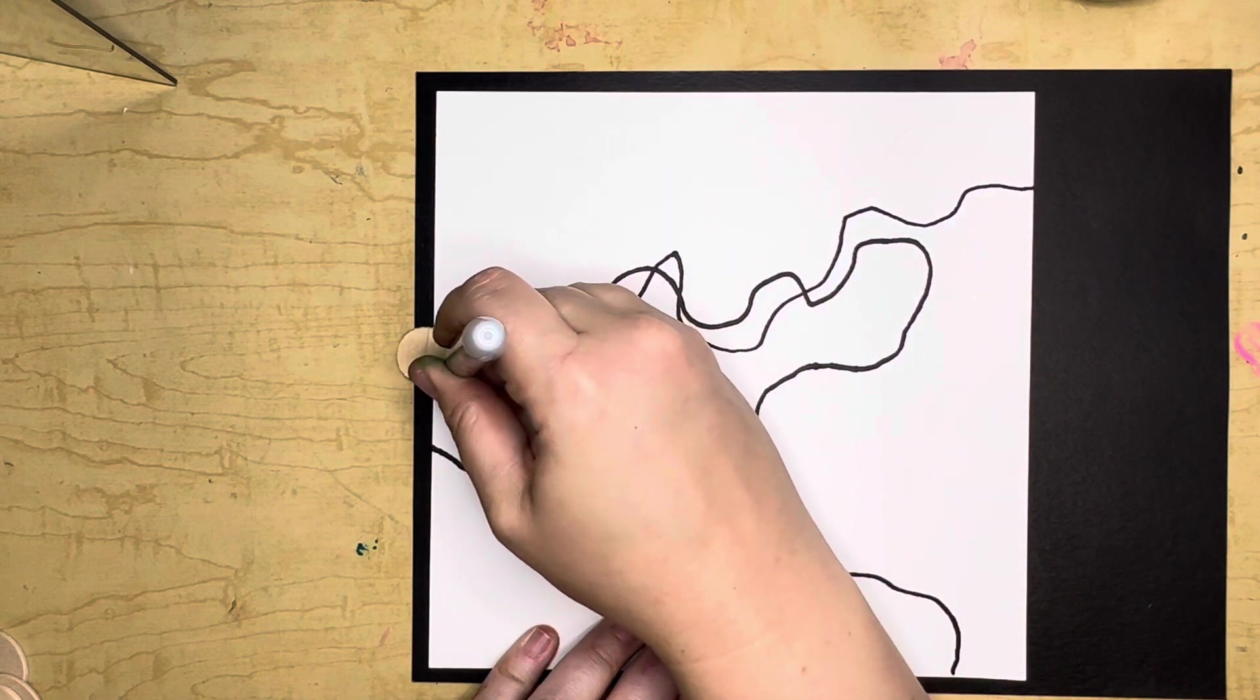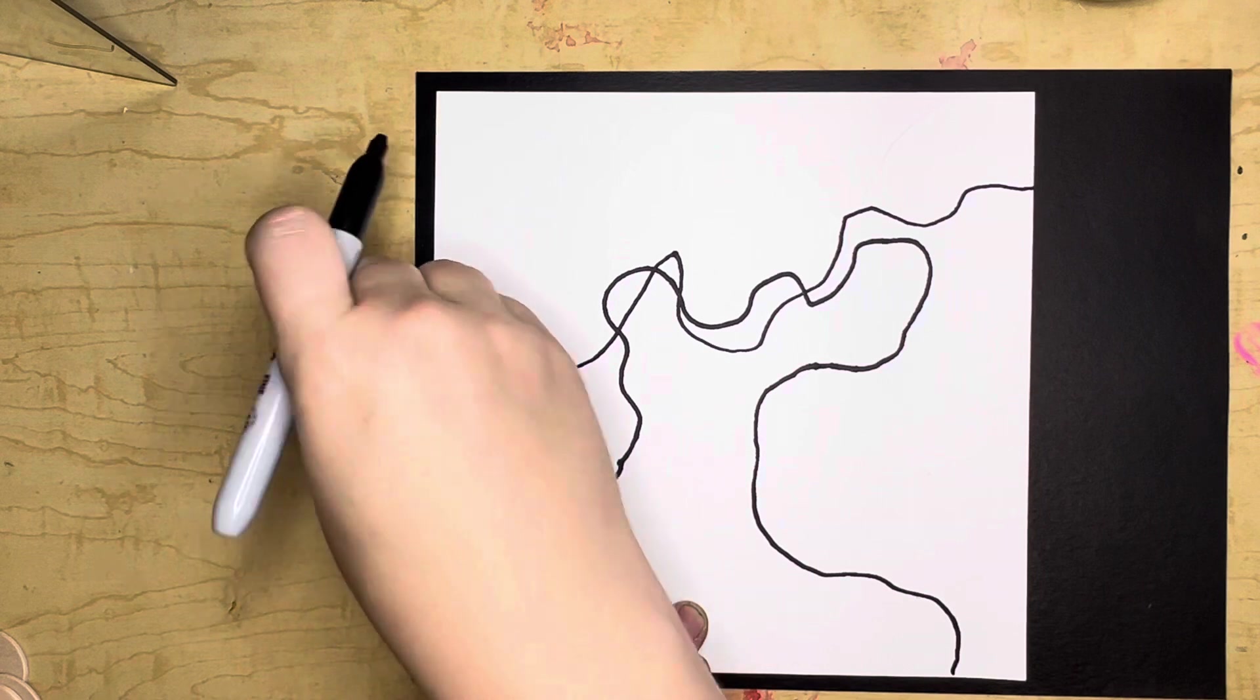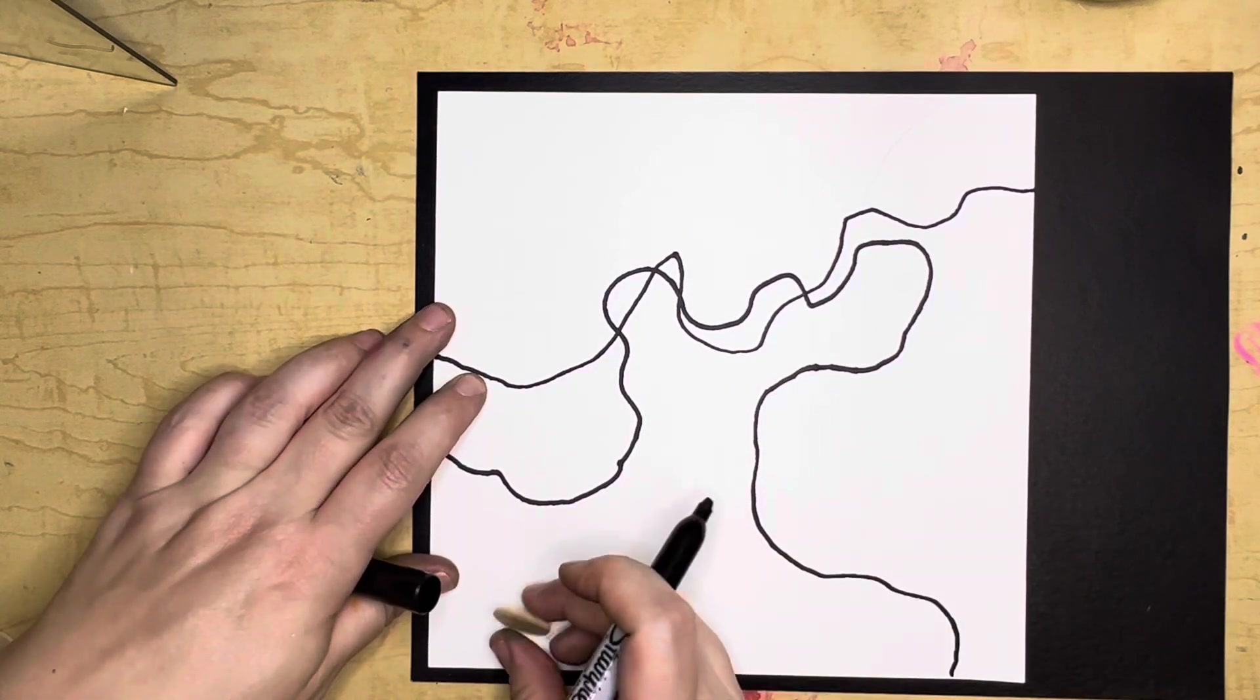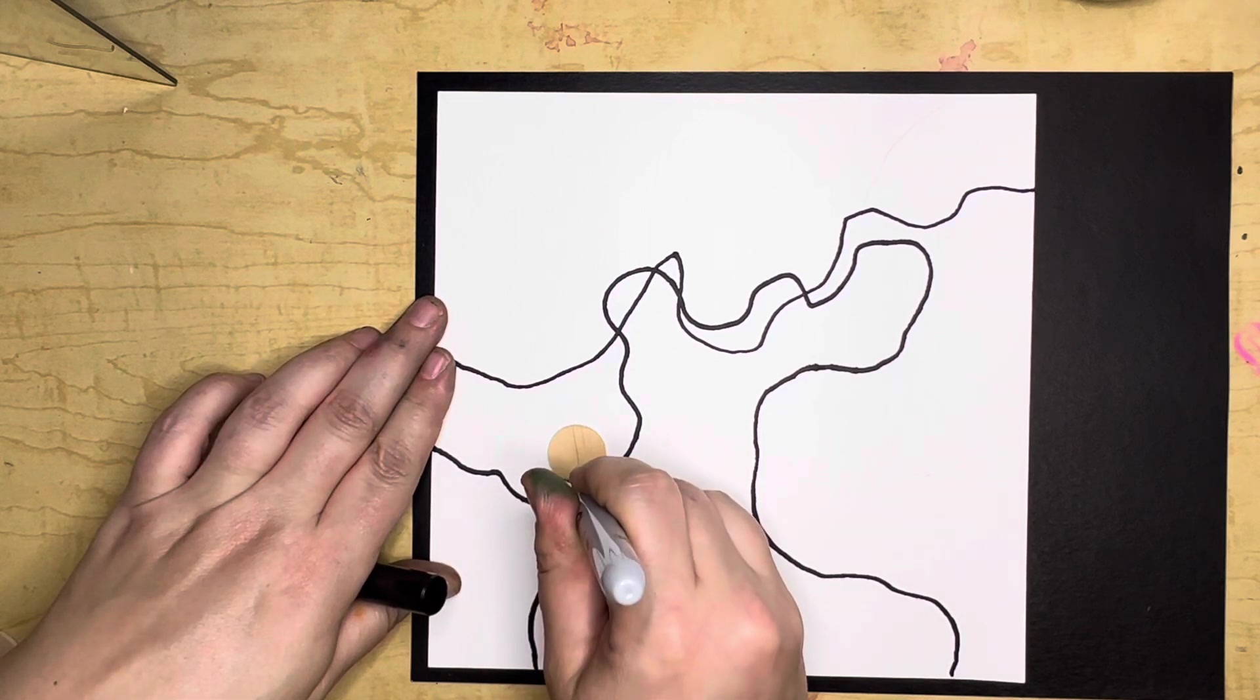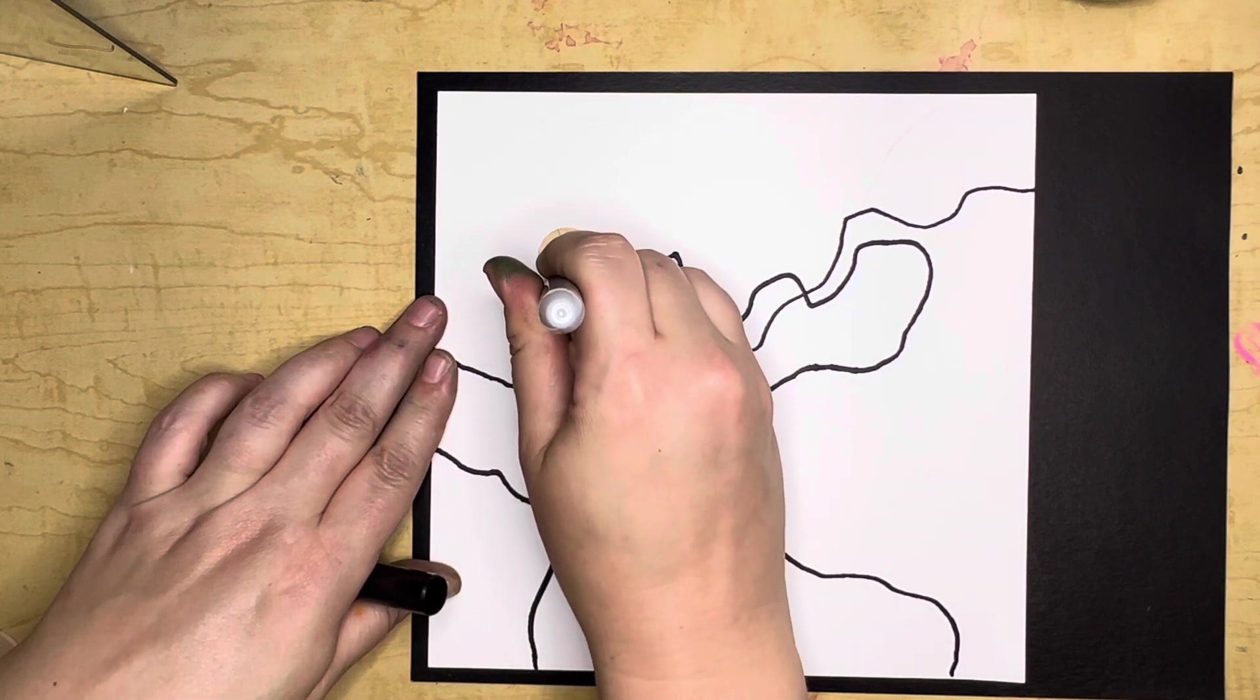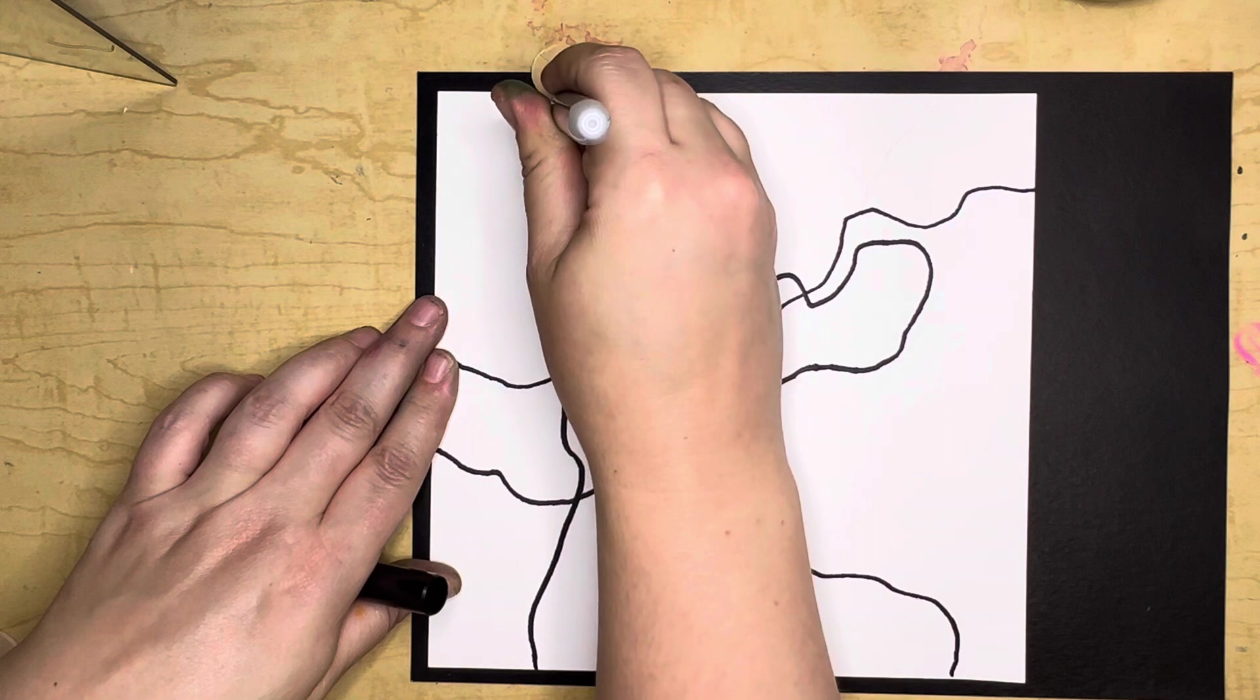It will cross paths with your line from before and that was my second line. Then I just pick it up once it goes to the edge of the paper again and start at a new edge where I think it can use some more exciting organic line.